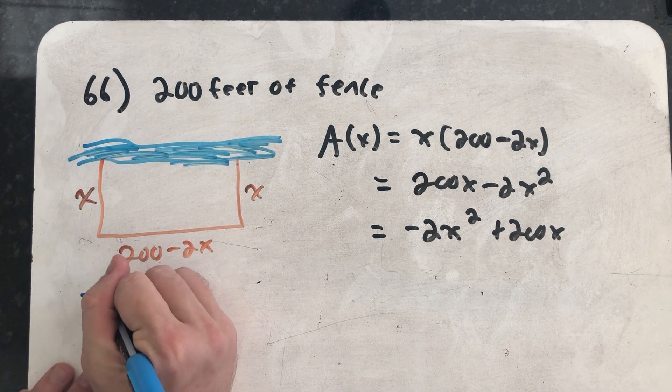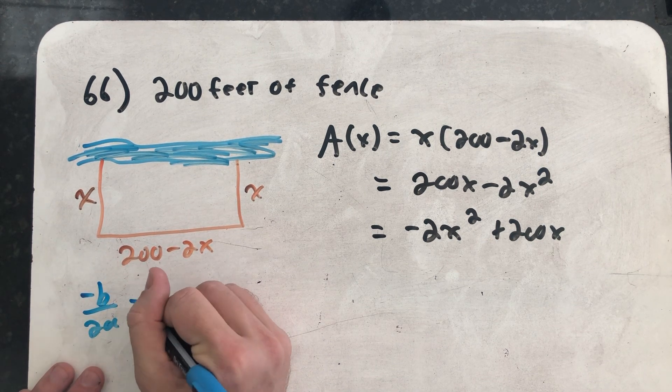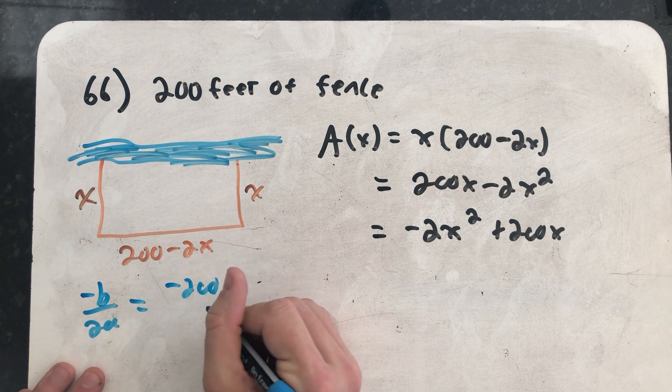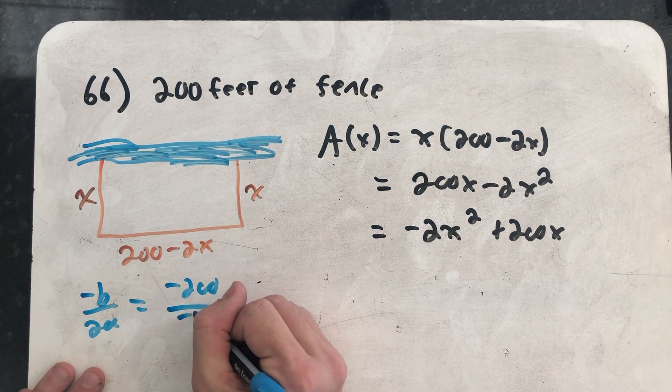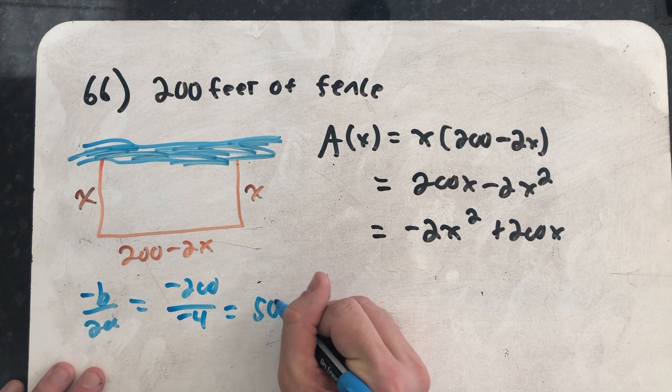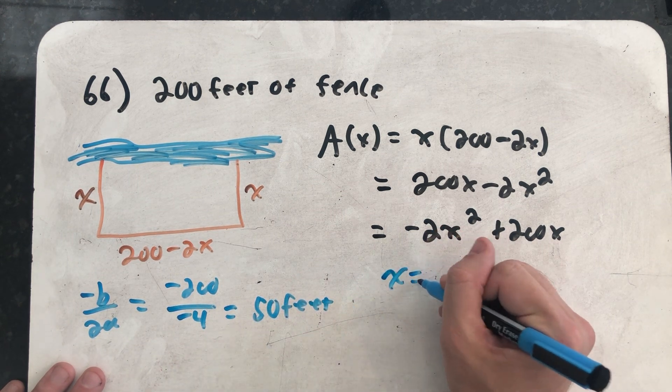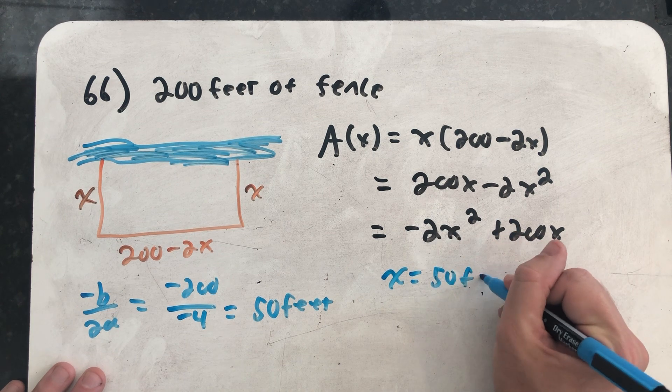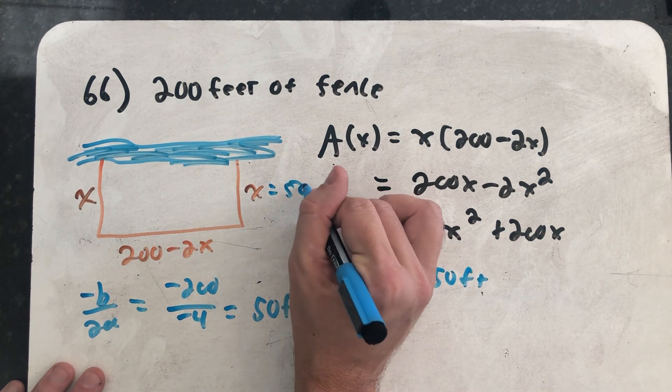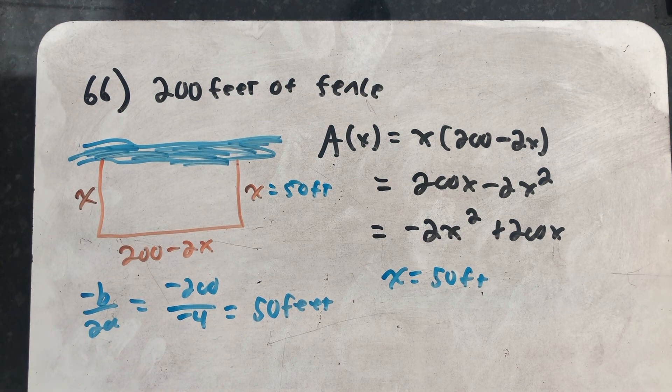The opposite of B all over 2A: minus 200, all over minus 2 times 2, which is minus 4. And I get x is 50 feet. Well, there's x, and that's one of the dimensions of my triangle.